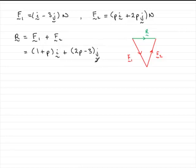Now because r is parallel to the i direction, that means it's just going to be something i. There'll be no j's in it. So that means that 2p minus 3 must equal 0.